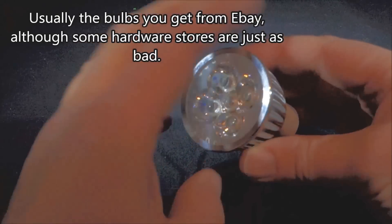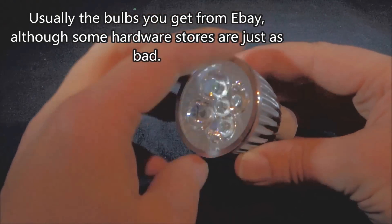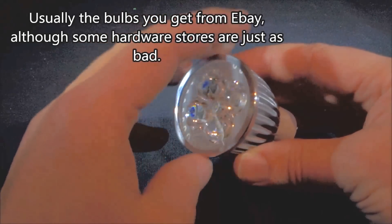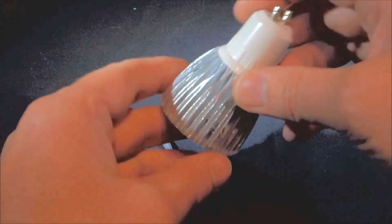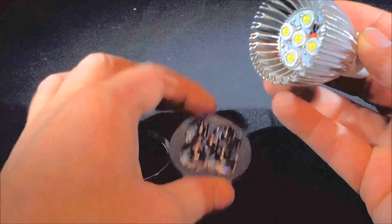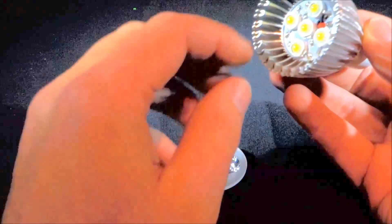So if you have a look at this bulb, bought it off eBay a couple of pounds, not a lot of money. Unscrew the front bit, you get the lens and all that kind of stuff.